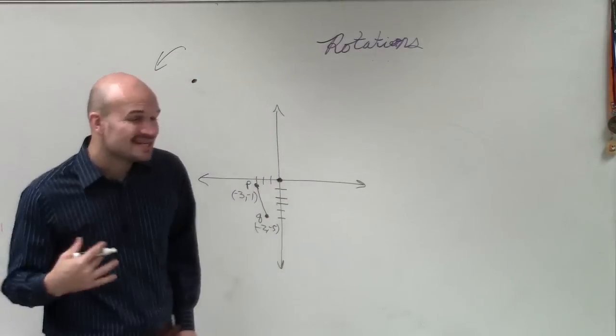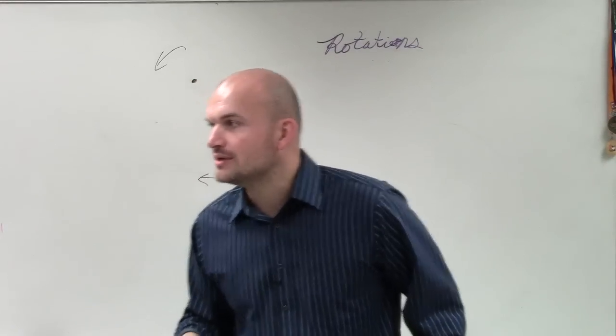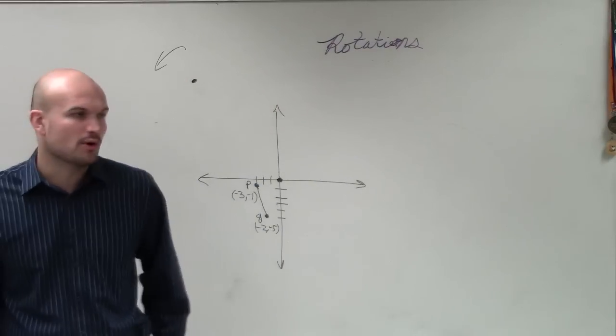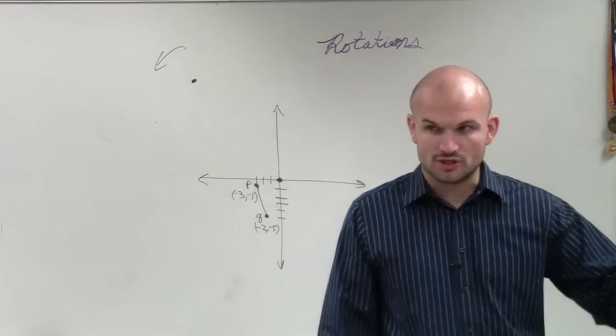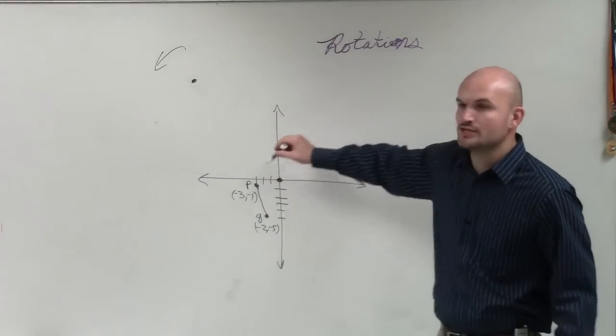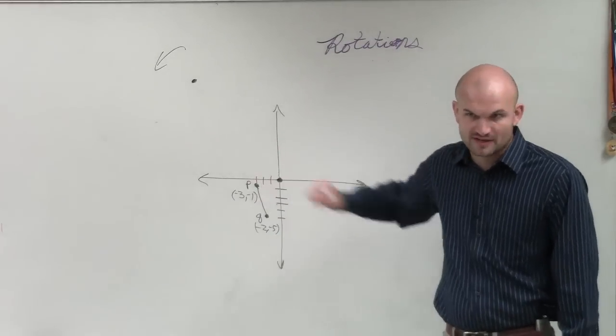And unless another point is designated as the fixed point, you can assume that your origin will be your point of reflection, or point of rotation. Unless there is another point that you are told to rotate about, you can assume that the origin will be your point of rotation. This will be your fixed point.